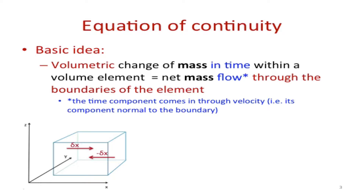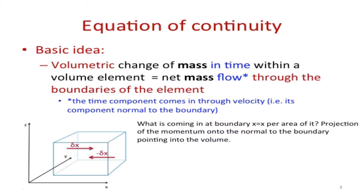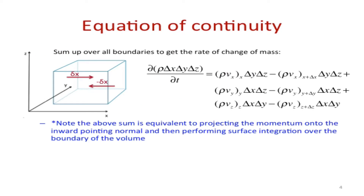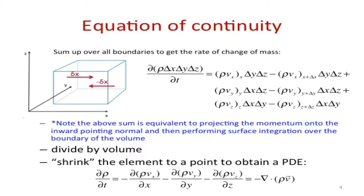When we essentially do a shell balance over a simple volume element, in the standard procedure of doing the balance — what's going in and out through the boundary, dividing by the volume of this volume element, and then shrinking the element to a point — you obtain a partial differential equation. For the equation of continuity, we know that d-rho/dt is equal to minus divergence of rho-v.